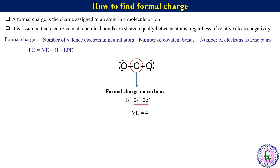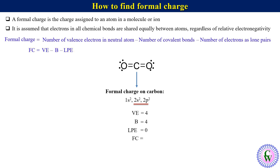There are 4 covalent bonds around the carbon, so B = 4. There is no electron as lone pair, so Lpe = 0. Putting the values of Ve, B, and Lpe into the equation gives: Fc = 4 − 4 − 0 = 0. So the formal charge on carbon is 0.